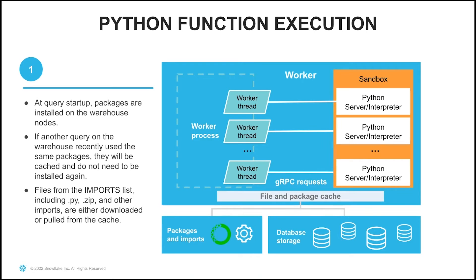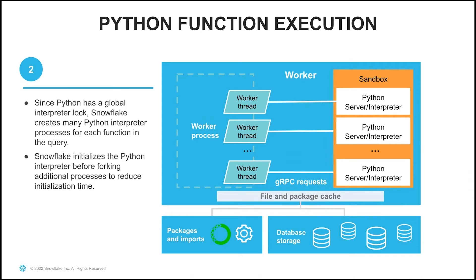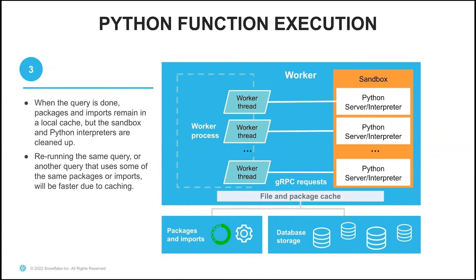Now let's take a look at Python function execution. When we start a query that uses a Python UDF, the packages that were specified are installed on the warehouse nodes. If you recently ran another query that used the same packages, they will be cached and do not need to be installed again. The files specified in the imports list — which could include .py files, zip files, or other imports — are either downloaded or pulled from the cache, so you also get a benefit from reuse if you run the same query multiple times. Since Python has a global interpreter lock, we create many Python interpreter processes for each function used in the query. We try to be as efficient as possible by initializing the Python interpreter before forking additional processes in order to reduce initialization time. When the query is done, we keep packages and other imports in a local cache, but the sandbox and Python interpreters are cleaned up. If you rerun the same query or another query using some of the same packages, because these are cached, the queries will be faster.